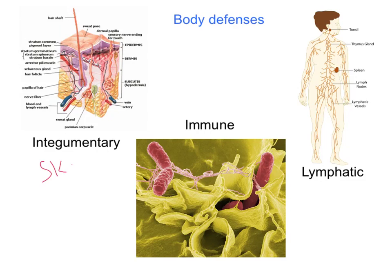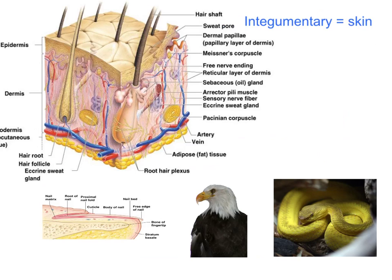The integumentary system is our skin. We're going to look at some different components of the skin and its derivatives. The integumentary system includes the skin as its main portion, as well as derivatives like hair and fingernails. In other organisms, things like feathers and scales would also be considered derivatives of the skin.